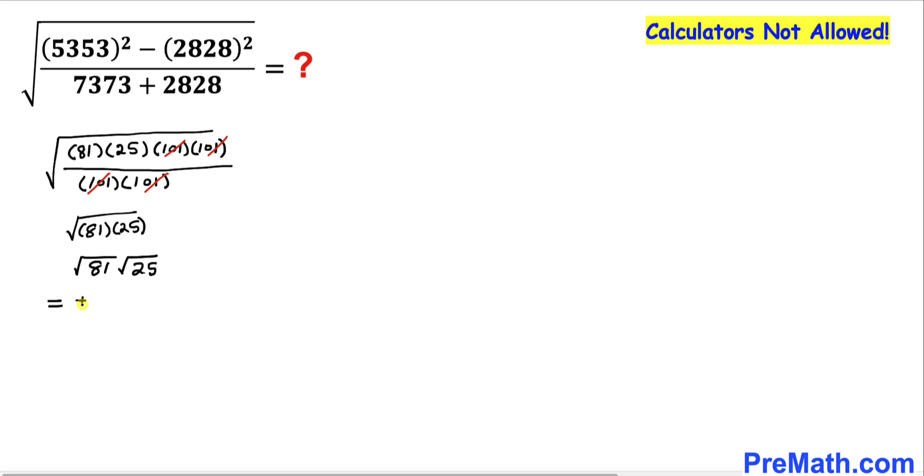So this could be written as positive or negative 9 times 5. Our answer turns out to be positive or negative 45. Thus, our simplified answer is ±45.